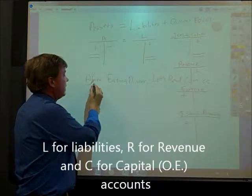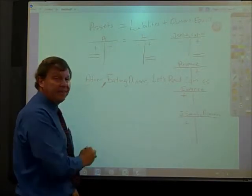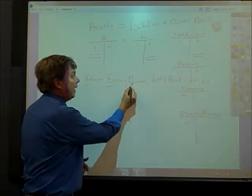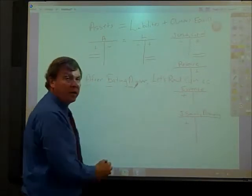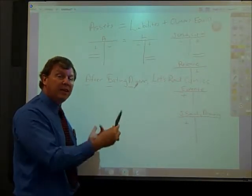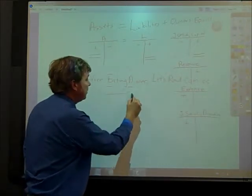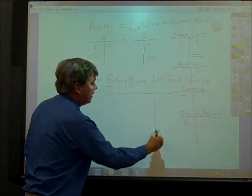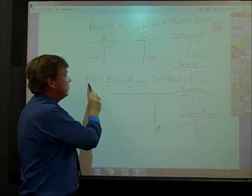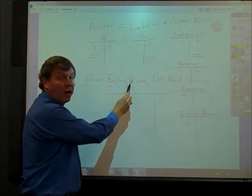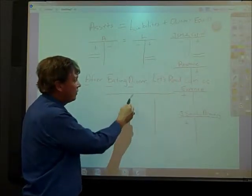The A stands for Assets, the E stands for Expense, and the D stands for the Drawing account. Because they are on the left side of the comma, if you view this as a giant T-account, it means that we increase assets, expenses, and the drawing account on the left side, or the debit side.